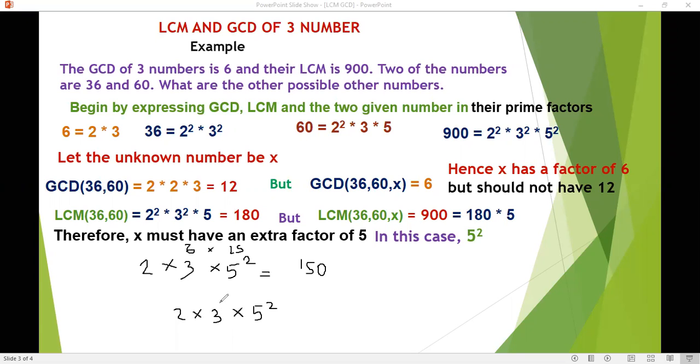But we can increase the power of 3. Because the LCM, remember our LCM of 900, has power 3 to power 2 here. So, these would be the two possible numbers: 150 and 450.